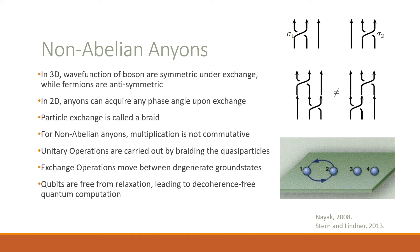Topological qubits make use of Majorana bound states as non-Abelian anyons — but what are these non-Abelian anyons? In three dimensions, wave functions of bosons are symmetric under exchange, while fermions are anti-symmetric under exchange. But in 2D, special particles called anyons can acquire any phase angle upon exchange, with the special cases of theta equal to zero corresponding to bosons and theta equals pi corresponding to fermions. In this system, a particle exchange is called a braid, and can be displayed with these particles exchanging. For non-Abelian anyons, multiplication is not commutative, so if we represent an operation as sigma1 and another as sigma2, we can see that performing sigma2 first and then sigma1 does not equate to performing sigma1 and then sigma2.